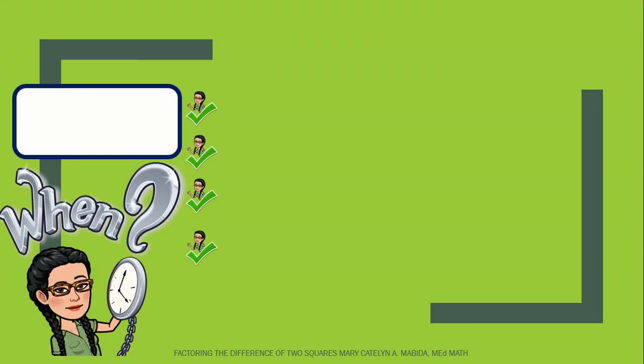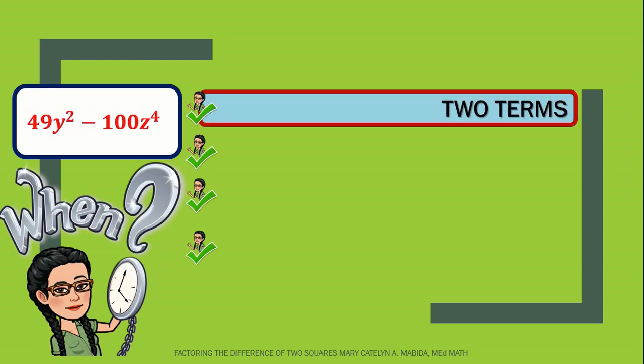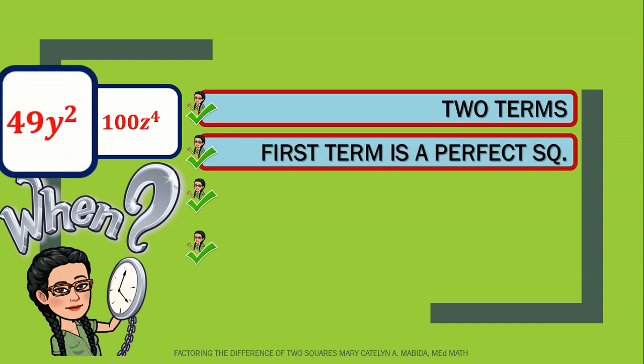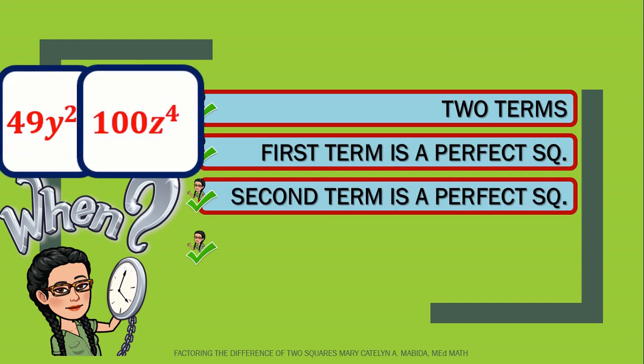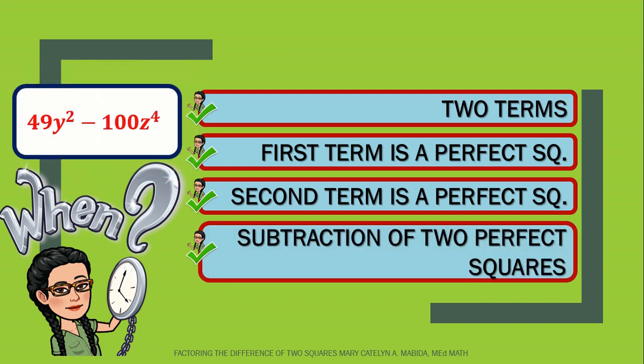But question, when can we tell that our polynomial is a difference of two squares? Let's check our checklist. First, count the number of terms. Is our binomial a subtraction of two perfect squares? Then you got it. You amaze me, guys.